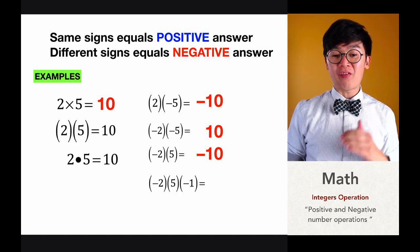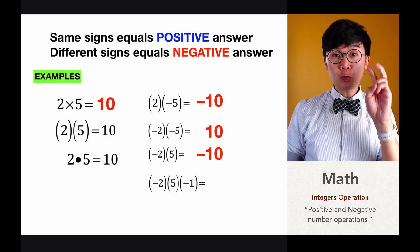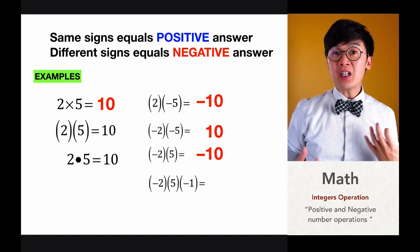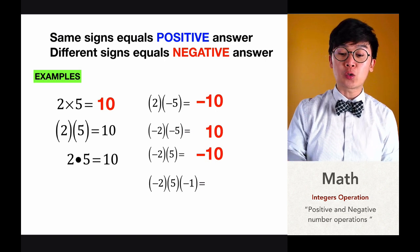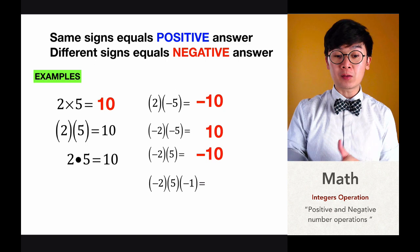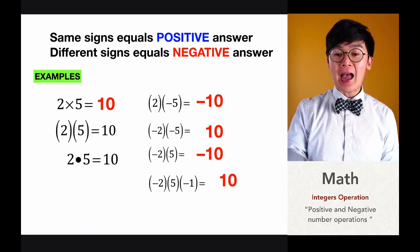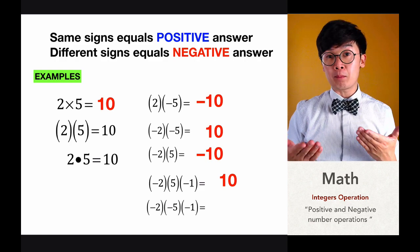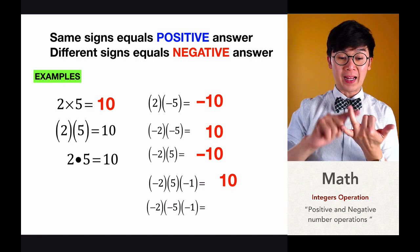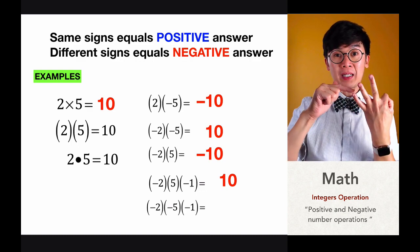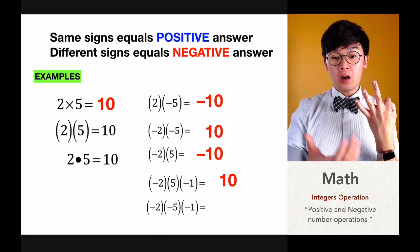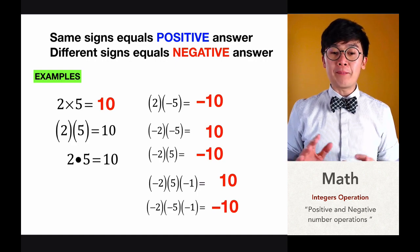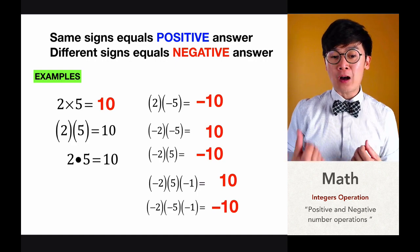For example, negative two times five times negative one has two negative signs — an even number — so our answer will be positive: two times five times one equals positive 10. And if we have negative two times negative five times negative one, since we have an odd number of negative values — three negatives — the answer will be negative 10. So those are the basic rules on how to multiply integers.